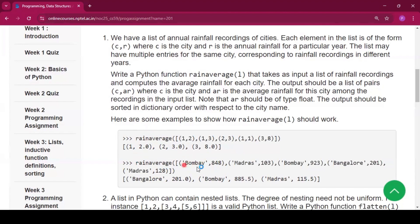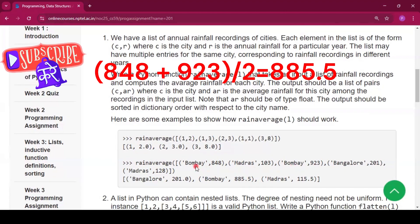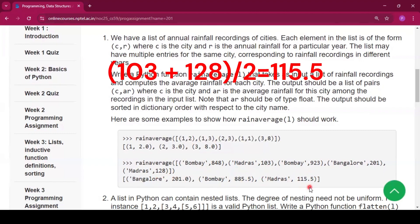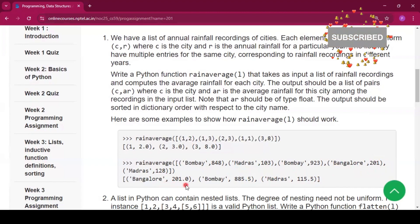Now for Bombay, there are two data given. One is 848, one is 923. So the average will be 885.5 average rainfall which is calculated for Bombay. Now for Madras, the average rainfall is (103 plus 128) by 2. We will get 115.5. And for Bangalore, there is just only single formation of the rainfall, so 201 will be the output.